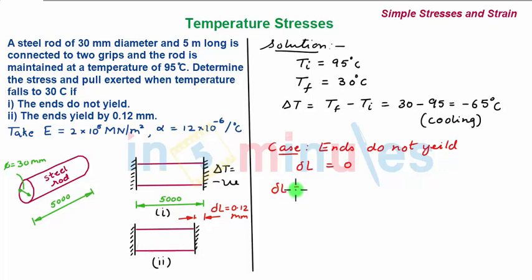Delta L is free expansion/contraction plus expansion/contraction prevented. We write the equation in this form since our delta T is negative, that is your steel bar is subjected to cooling.